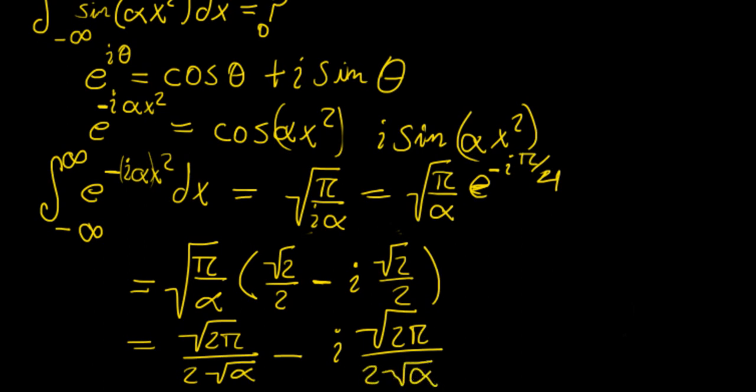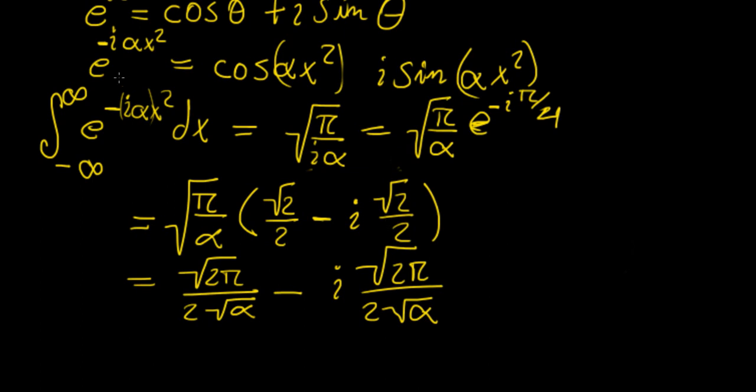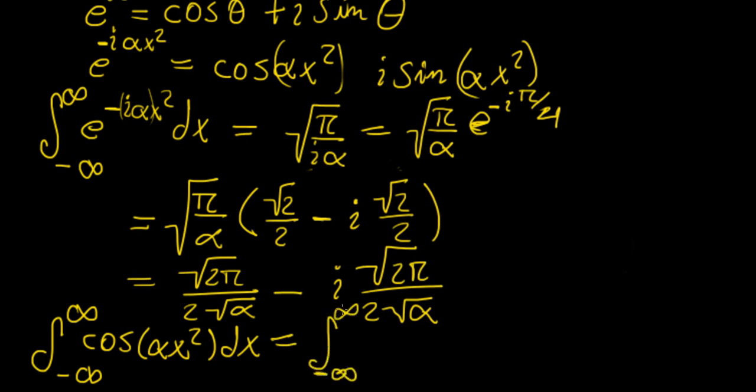But the really interesting thing is that knowing this, and knowing the fact that this decomposes into that, we can actually write the following results. So we're going to have cosine of alpha x squared dx equals to the integral minus infinity to infinity of sine alpha x squared dx. And both of them are going to be equal to the value square root of 2 pi over 2 times square root of alpha.